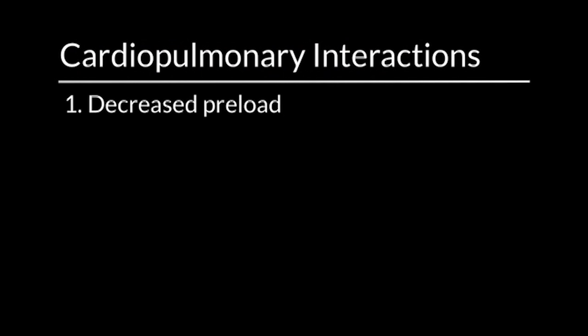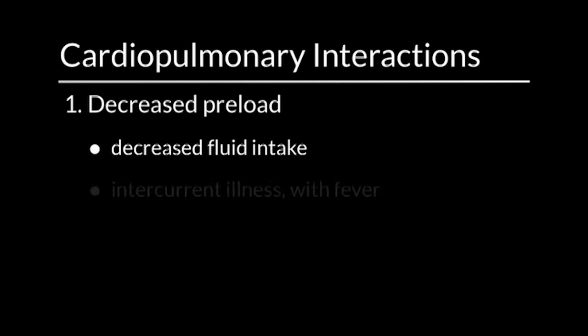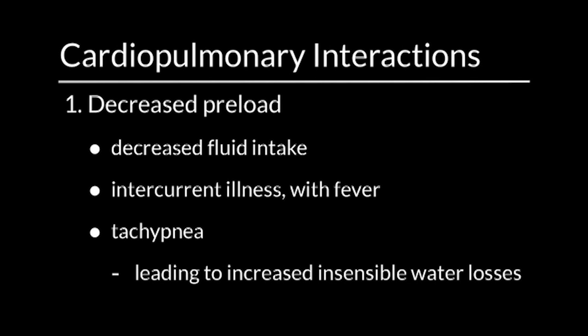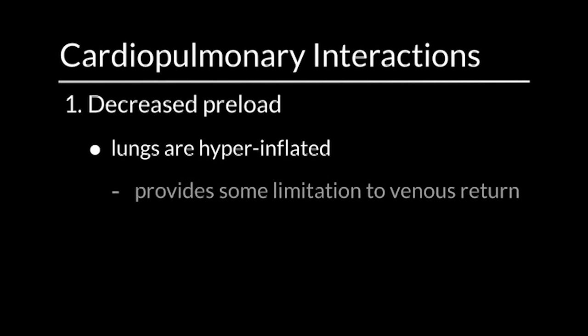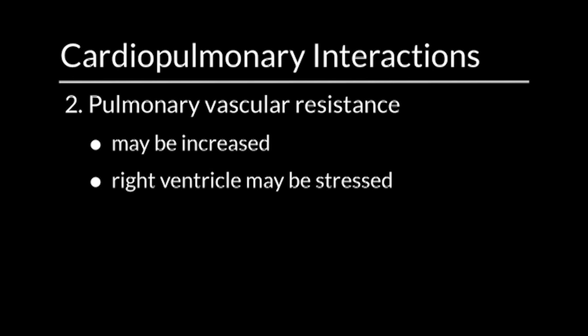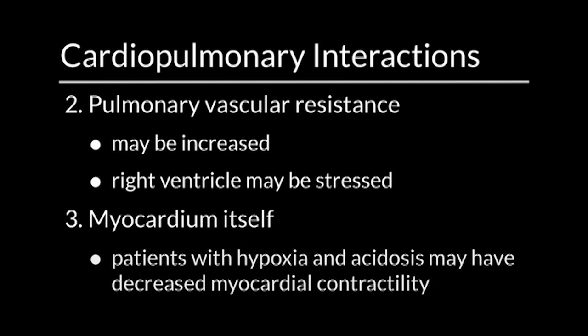When we think about intubating a patient with asthma, we have to consider cardiopulmonary interactions. First, decreased preload: the patient may have been ill for days with decreased fluid intake, fever, and tachypnea leading to increased insensible water losses. Also, hyperinflated lungs may limit venous return. Second, pulmonary vascular resistance may be increased in the setting of bronchoconstriction, stressing the right ventricle. Third, patients with hypoxia and acidosis may have decreased myocardial contractility.